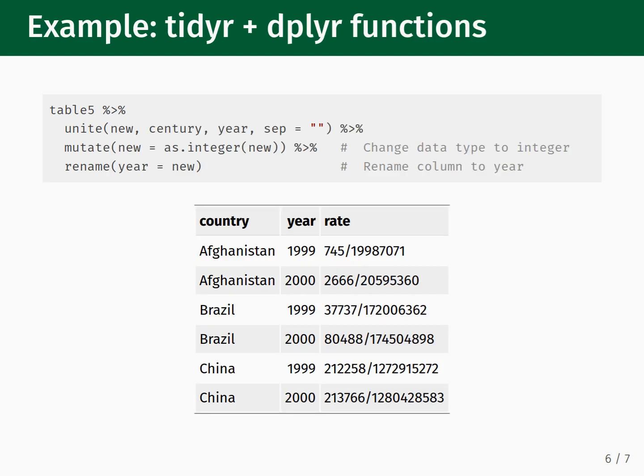Two additional steps are needed to transform the table to the same starting point in the Separate lecture. The new column needs to be renamed to Year and converted into the integer data type. We can take care of both of these steps easily using the dplyr package. We pipe the result of the Unite function into Mutate. Inside Mutate, we pass the input 'new = as.integer(new)'. Because the new column is specified on both sides of the equal sign, this will update the data for the new column in place, converting it to the integer data type. The result is then piped into the rename function, where we provide 'year = new' as our input, meaning we want to take the new column and change its name to year. We then execute this sequence of commands, yielding the following table, which is the same as Table 4 — the starting point for the lecture on the separate function.